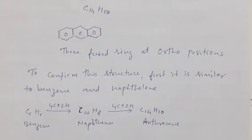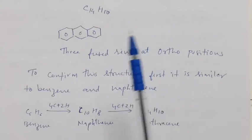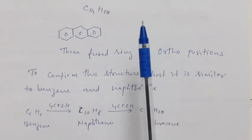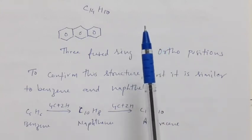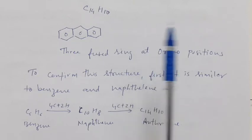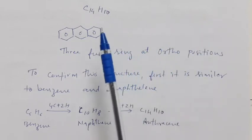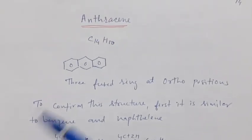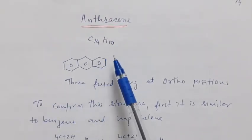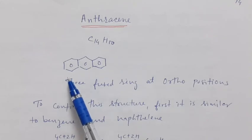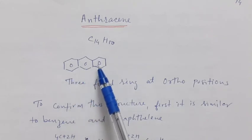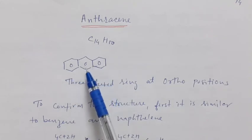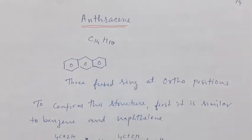This is the 6th lecture on polynuclear hydrocarbons and it is about anthracene. Anthracene is another fused polynuclear hydrocarbon whose molecular formula is C14H10. Its structure has 3 rings which are fused to each other at the ortho position.